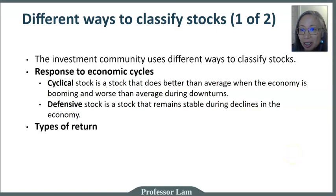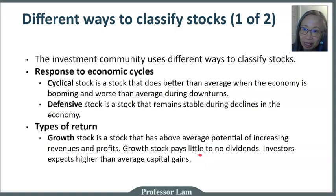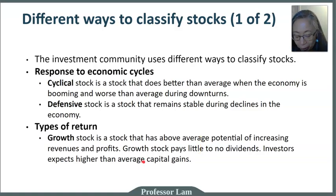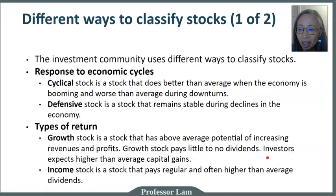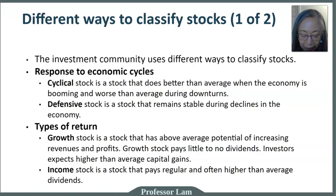Another way to classify stocks is by the components of their return. A growth stock is one that grows faster than average, and you expect it to pay fewer dividends — some may pay no dividend at all. Technology companies and start-ups are good examples. Investors expect most of their return from growth stocks to come in the form of capital gain, and at a much higher level than an average stock. In contrast, an income stock pays a lot of dividends, and investors plan on their return being delivered primarily in the form of dividends.